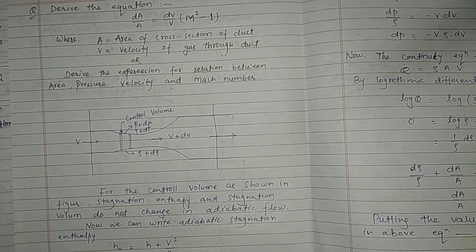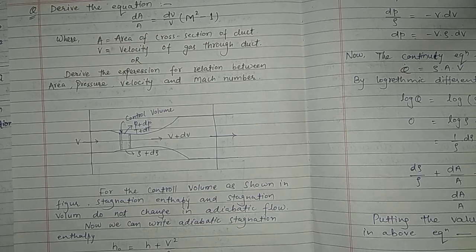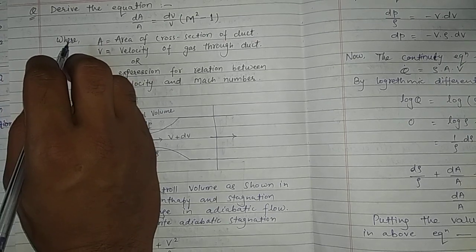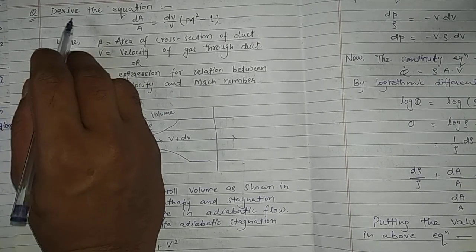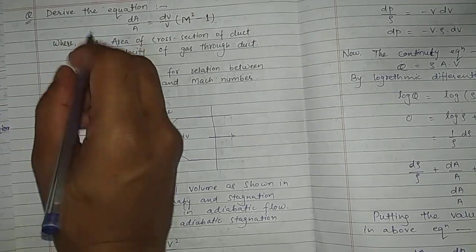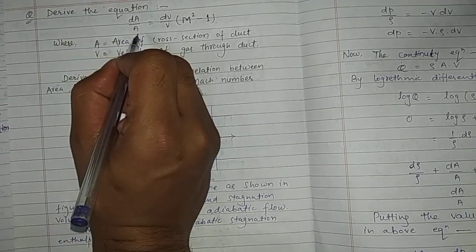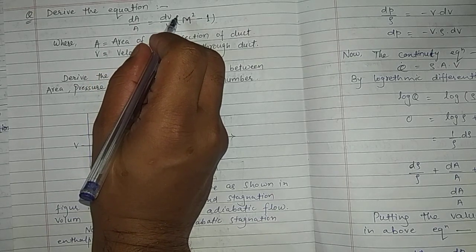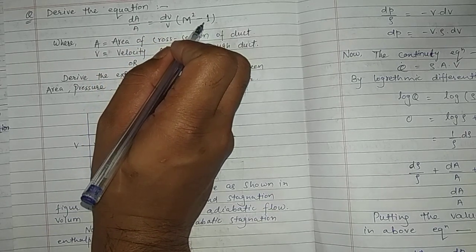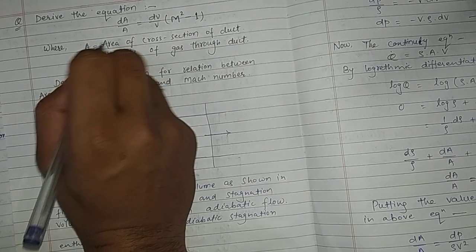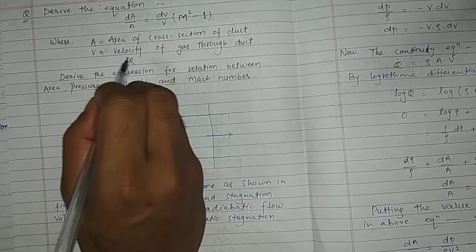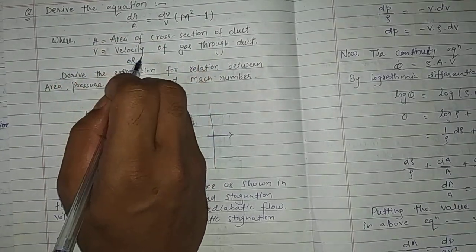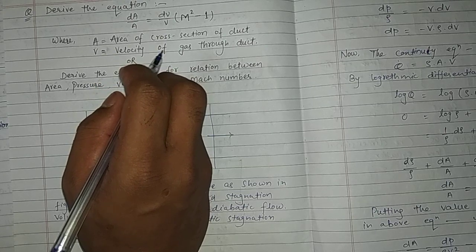Hey guys, welcome back. Today we will derive the equation dA upon A equals to dV upon V into M squared minus 1, where A is the area of cross section of the duct, and V is the velocity of gas through the duct.